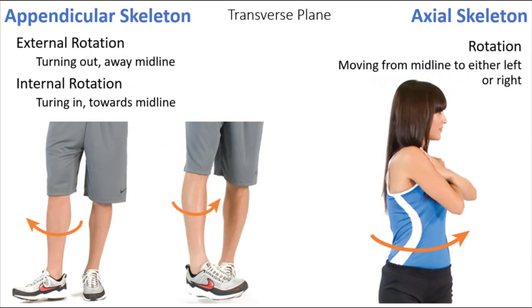When we move to the transverse plane, we have internal and external rotation, sometimes called medial and lateral rotation. External rotation is turning out away from midline — also called lateral rotation because lateral means away from midline. Internal rotation is the segment turning in towards midline — also called medial rotation. In the axial skeleton, the midline is moving, so you do not internally or externally rotate through the spine. Instead, you turn your head or trunk to the left or right — for example, left trunk rotation involving lumbar, thoracic, and some cervical movement.